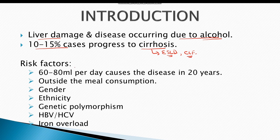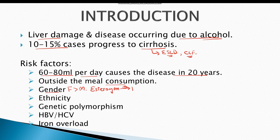The risk factors for alcoholic liver disease include excessive use of alcohol. In most cases almost 60 to 80 ml of alcohol per day causes disease in 20 years. Moreover, consumption of alcohol outside of meals also increases the risk of the disease. It is more prevalent amongst females rather than males. One factor thought to influence this is estrogen levels — excessive estrogen levels result in increased permeability of the gut, resulting in excessive absorption of toxins into the blood. These toxins are transported through the portal blood into the liver, resulting in alcoholic liver disease.